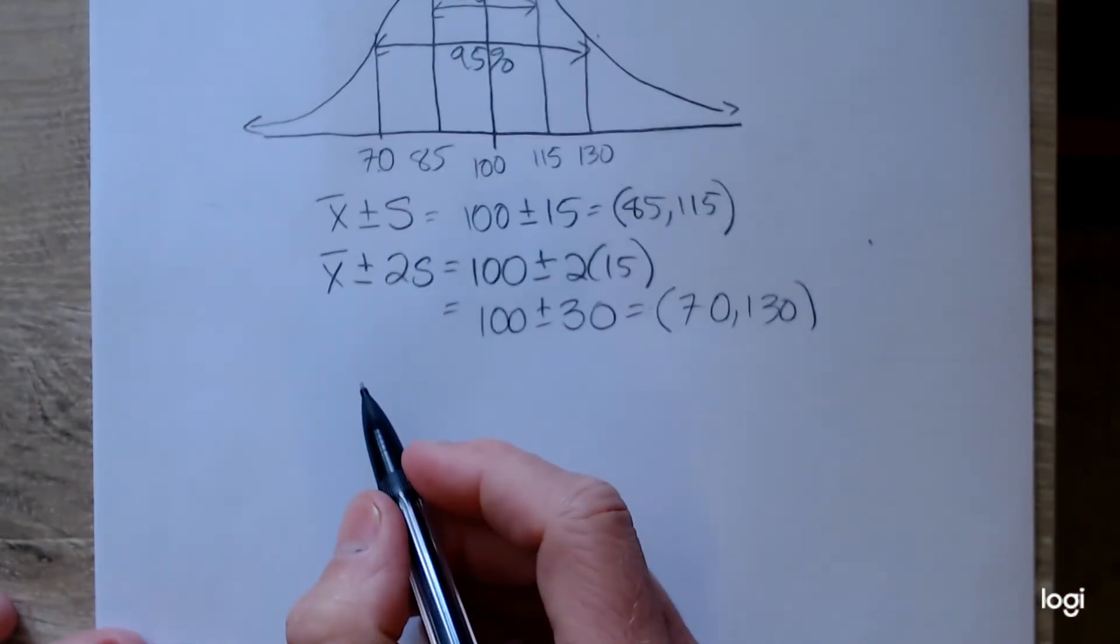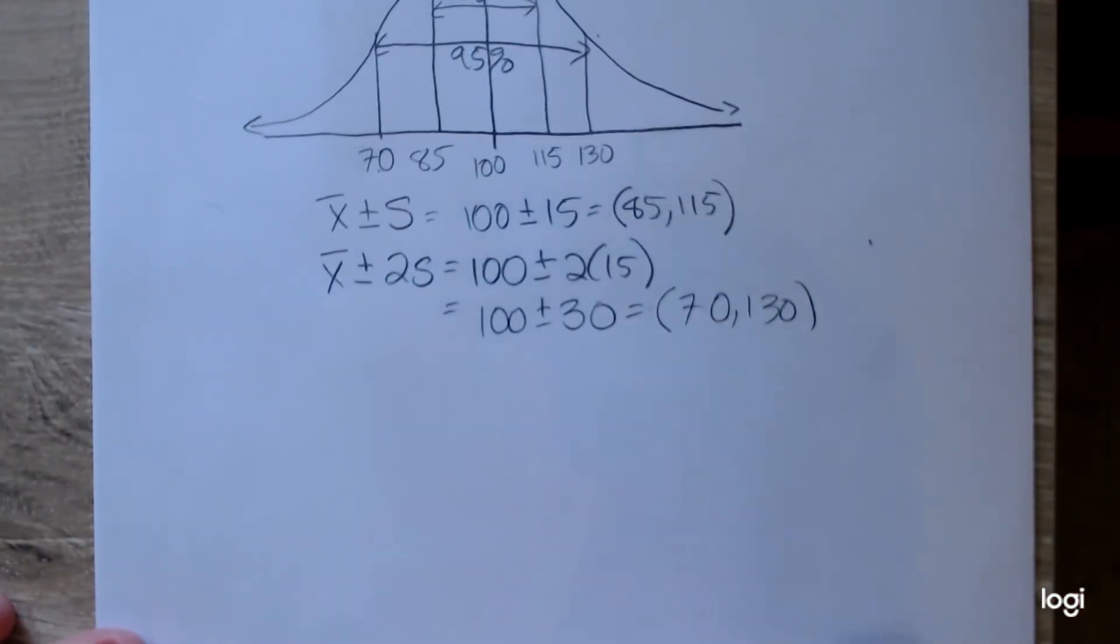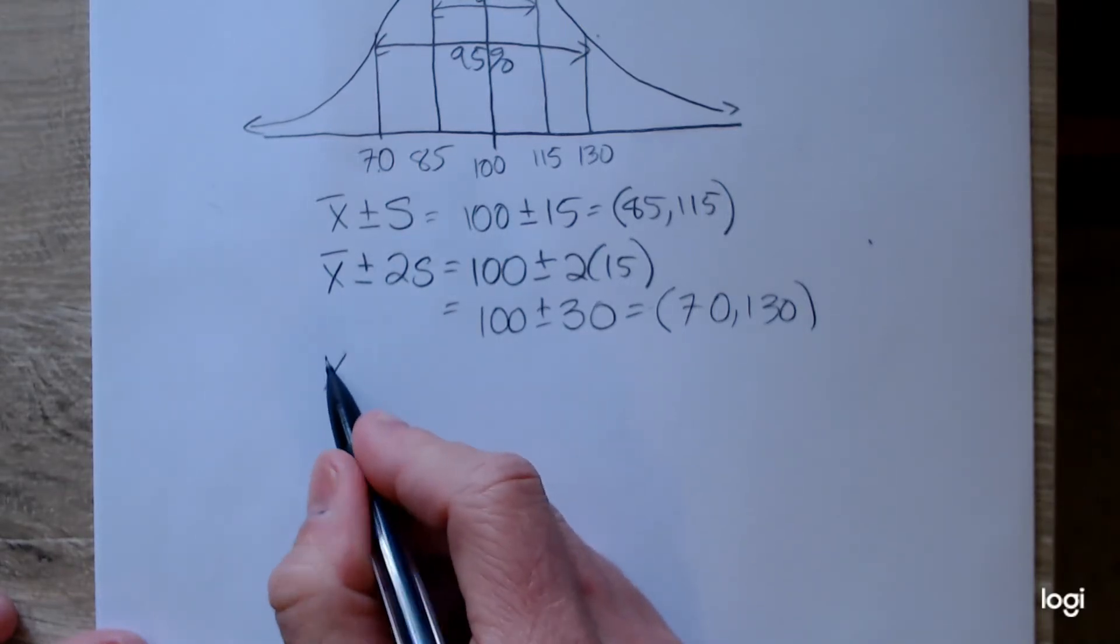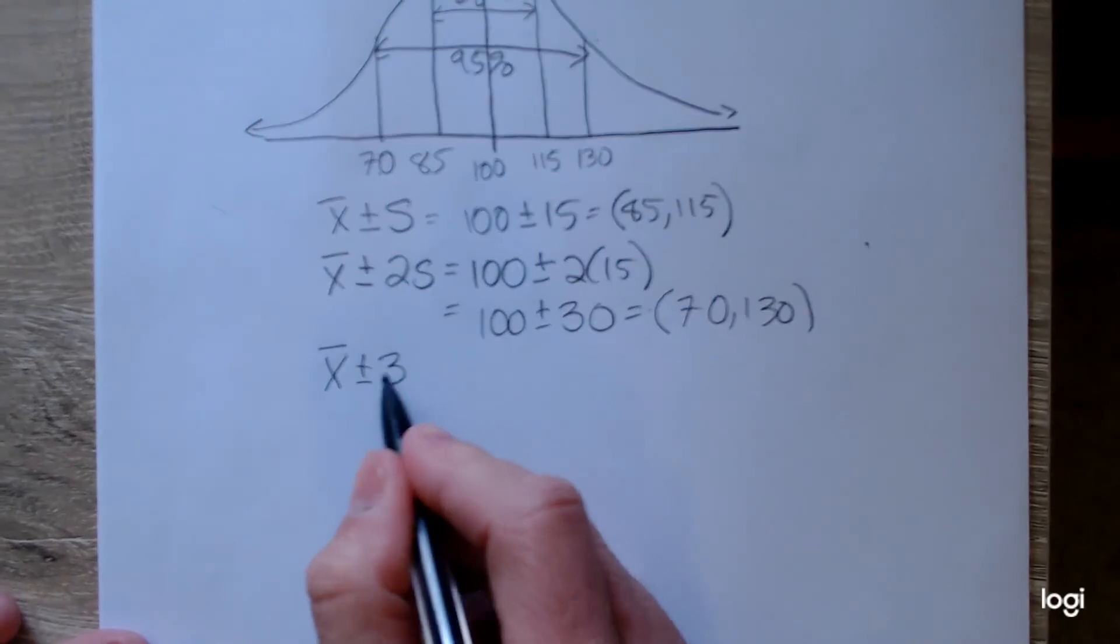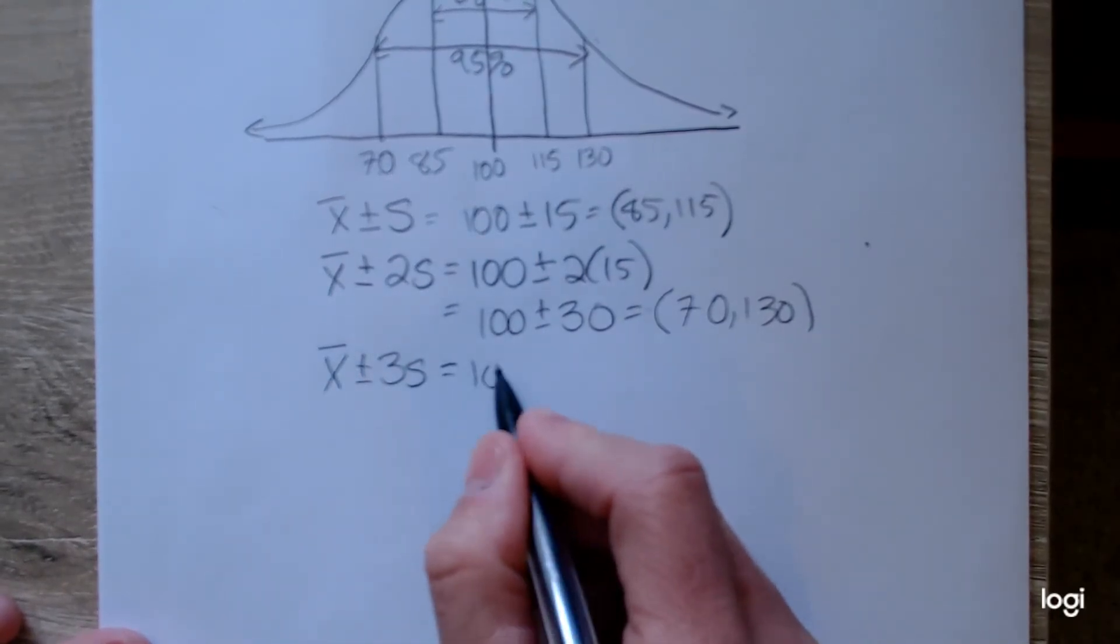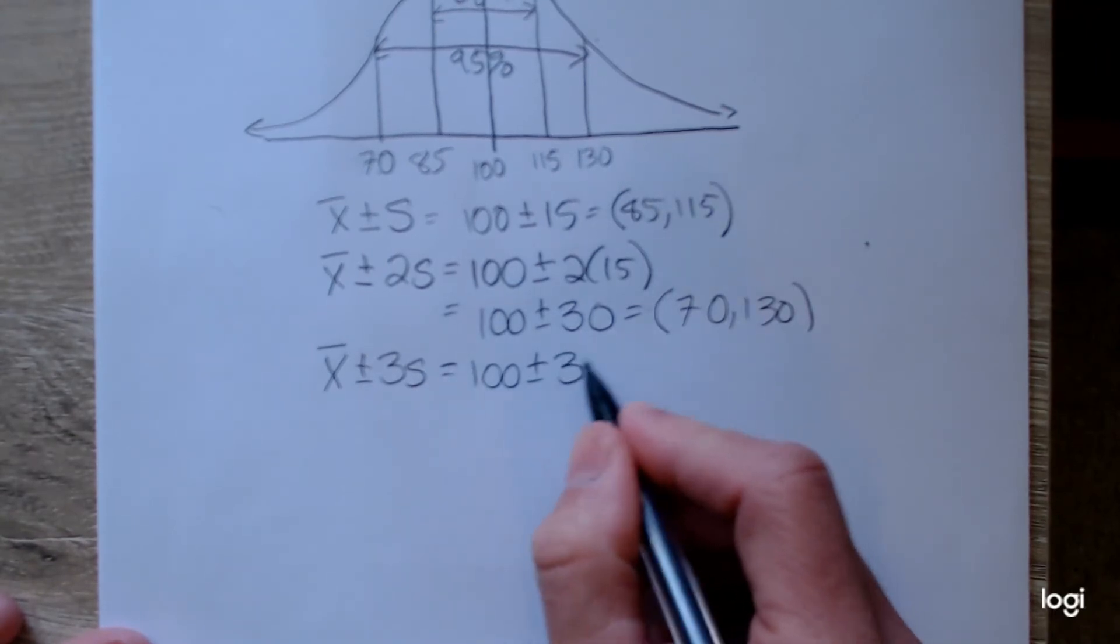And then if I wanted to, I could go out one more standard deviation. Going out one more standard deviation is practically the whole thing. So that would be x-bar plus or minus 3 standard deviations. So that's going to be 100 plus or minus 3 times 15.